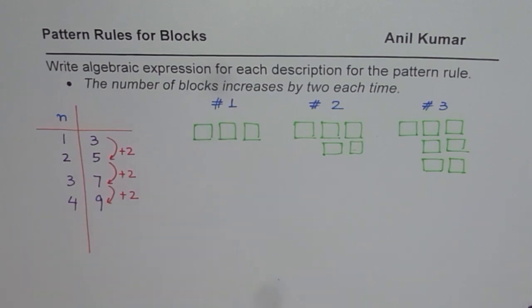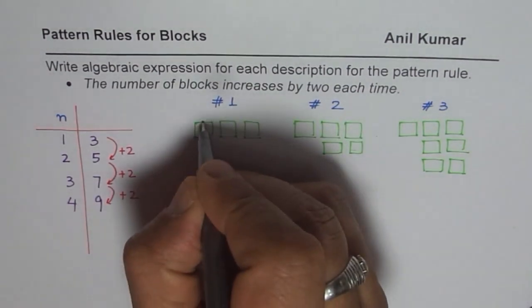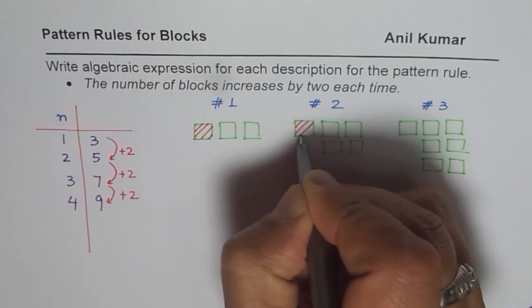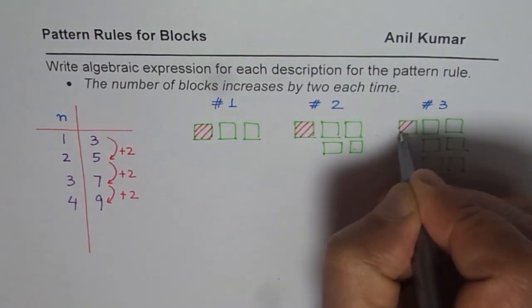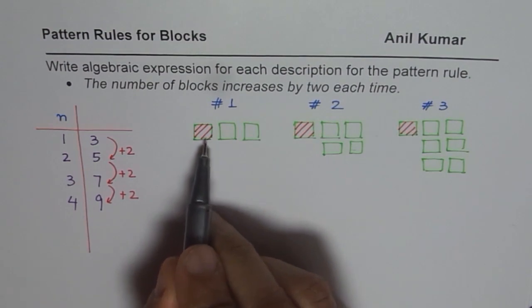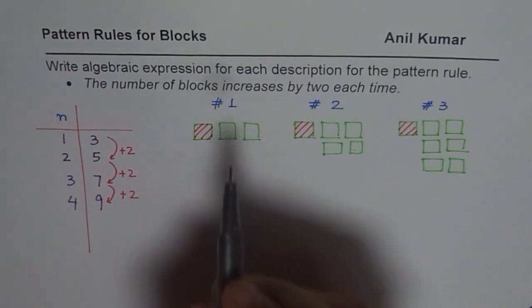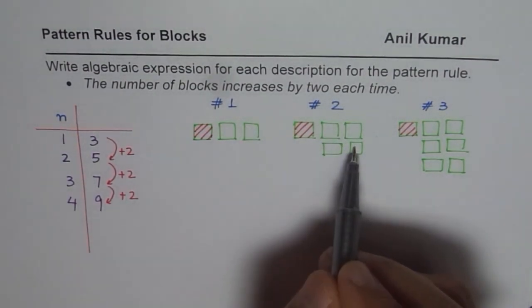So what we can notice here is that if I keep this away kind of fixed, if I shade this up, then what do you notice? We notice that one is fixed, so one is not changing. But here we have two, then we have four and six.